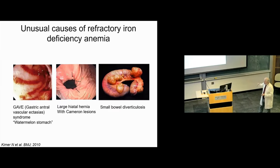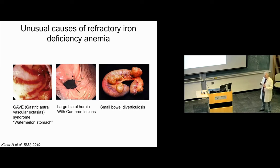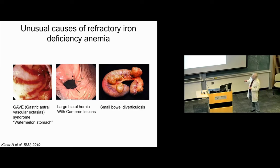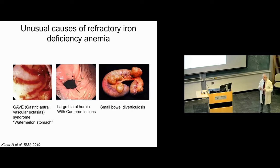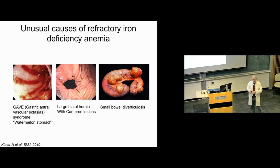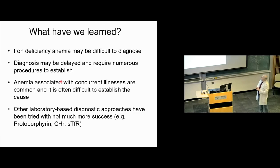Other more unusual causes include GAVE — gastric antral vascular ectasias, or watermelon stomach — which is very friable and can bleed. Hiatal hernias with Cameron lesions can be subtle: linear erosions that are hard for the endoscopist to see. When I see someone with a large hiatal hernia, that is a known cause of iron deficiency and not rare. We've also seen small bowel malignancies and small bowel diverticulosis as causes. Iron deficiency can be difficult to diagnose — the diagnosis can be delayed and sometimes needs repeated procedures. Concurrent illnesses are common and make diagnosis more difficult.